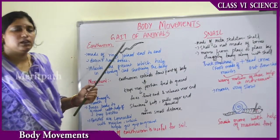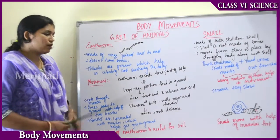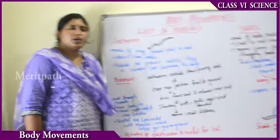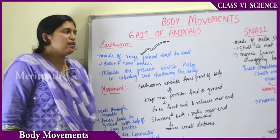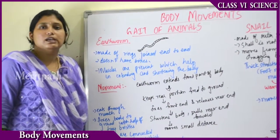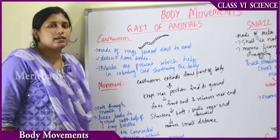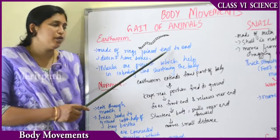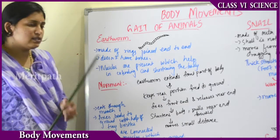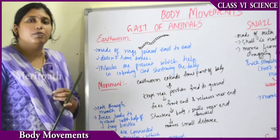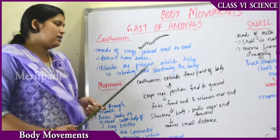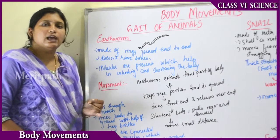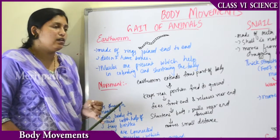The first animal we will deal with is the earthworm. Earthworms are known as the friends of farmers. They live in soil and do not have any specific body systems — only a single digestive system extending from front to back. The earthworm is made up of rings joined end to end. It does not have any bones; it is very soft in structure and made up of only muscles, which help in extending and shortening the body.